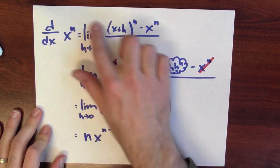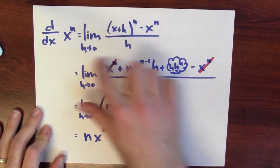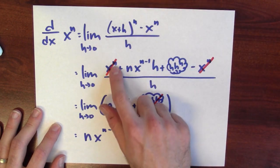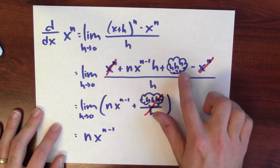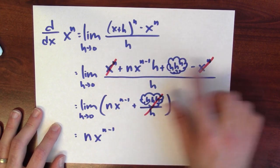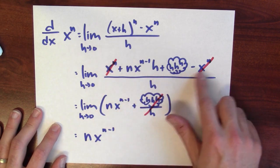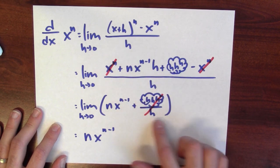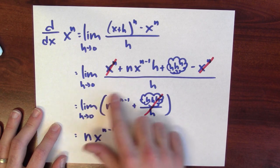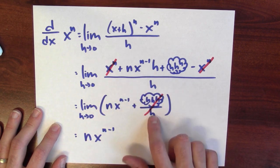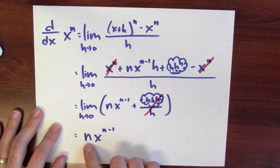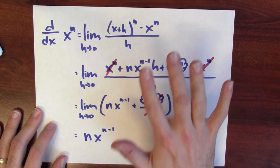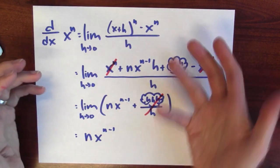The derivative of x to the n is the limit of the difference quotient. If n is a positive whole number, I can expand x plus h to the n and get x to the n plus n times x to the n minus 1 times h, plus terms with higher powers of h, minus x to the n, all over h. The x to the n and minus x to the n cancel, the h cancels, and the remaining terms with h go to 0. I'm left with n times x to the n minus 1, which is the derivative of x to the n. This is a completely valid argument as long as n is a positive whole number.